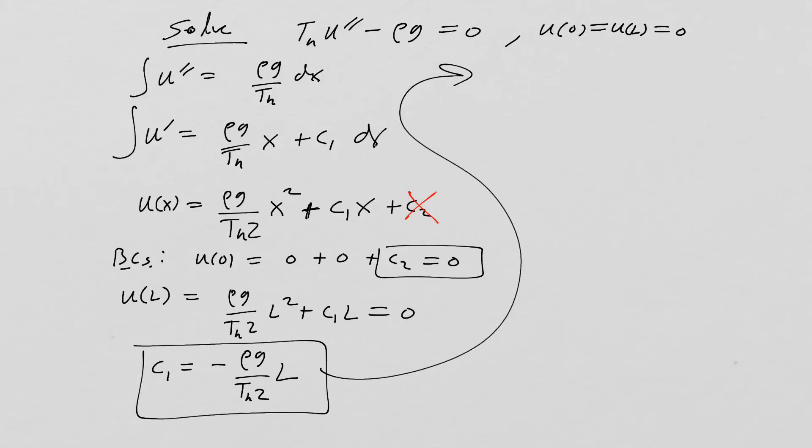Now we can put this all together. We have u of x is equal to ρ·g over T_h times two in the denominator there times x squared minus ρ·g·T_h over two times L·x. And that's it. There's our function.